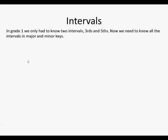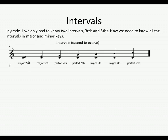In Grade 1, we only had to know two intervals — thirds and fifths. For Grade 2, we're going to need to know all the intervals in both major and minor keys. Starting in a major key, we're in C major here. You can see that a C next to a D would be known as a major second.